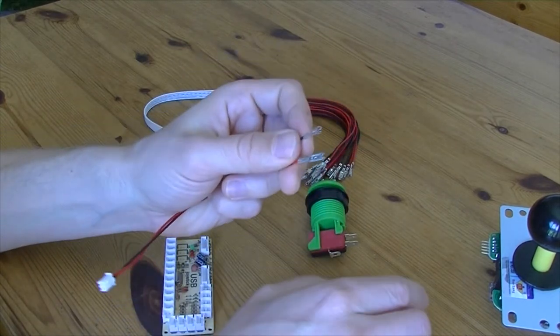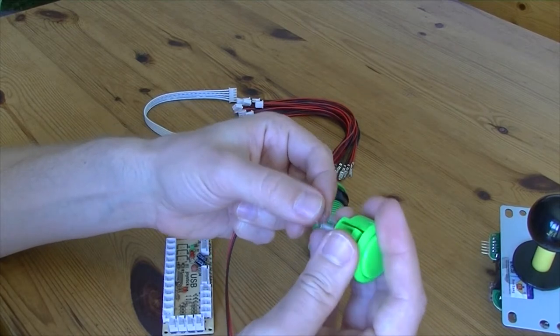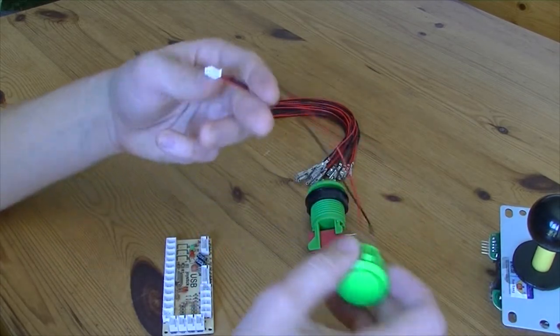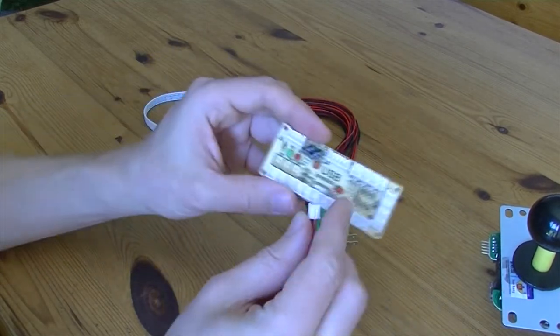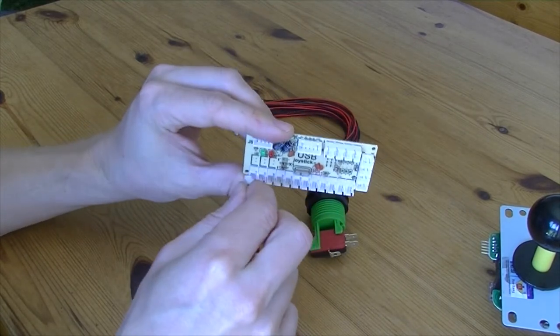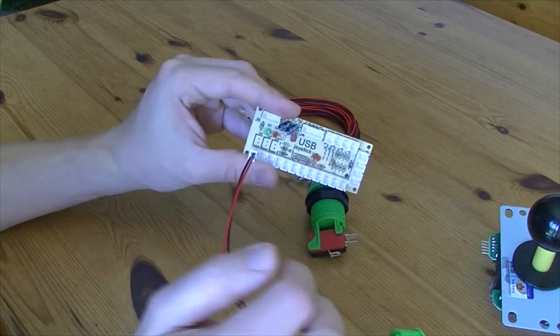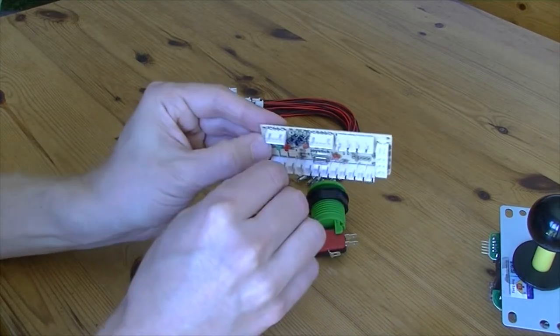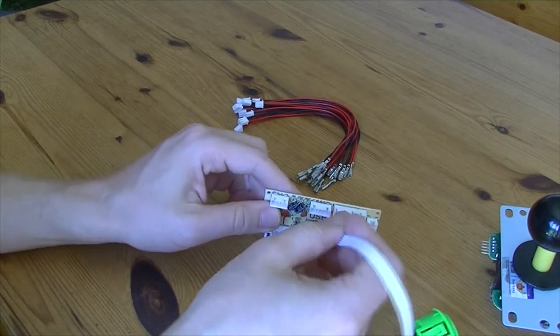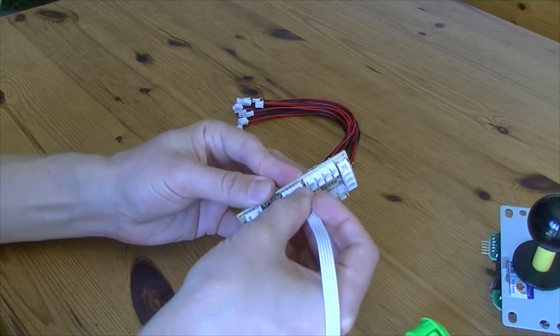Make sure you order the right cables for it. The small ones here fit in the Sanwa like so. Once they're in there you can pop this little end here into your encoder. At the bottom row you've got buttons from 1 to 12. This cable here is for the Sanwa or Sanwa clone. You pop this in like so.